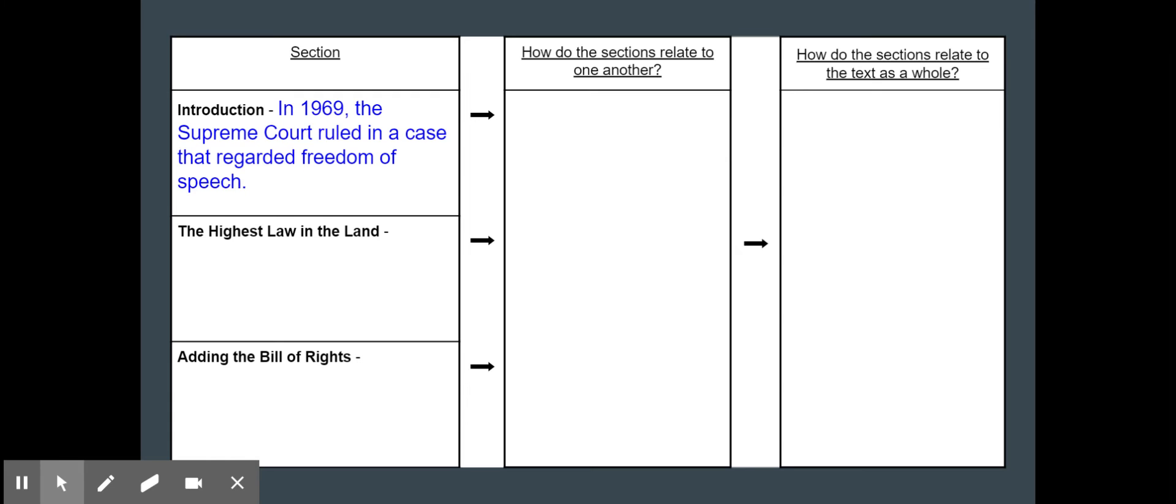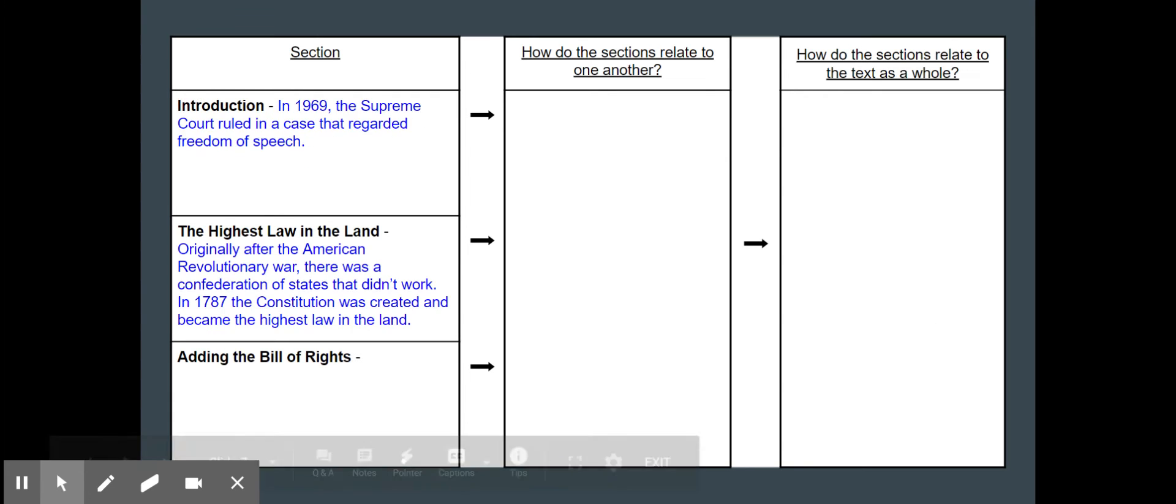Okay so it's starting to kind of tell me about how the Bill of Rights was used and then in the highest law of the land it talks about how there was the confederation of states that didn't work and so in 1787 that Constitution was created. We've kind of already touched on this how the Constitution is the highest law in the land.